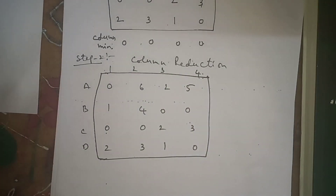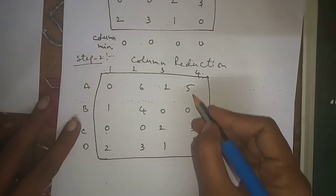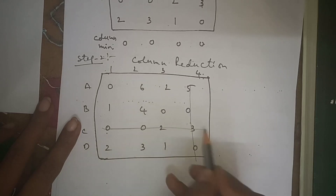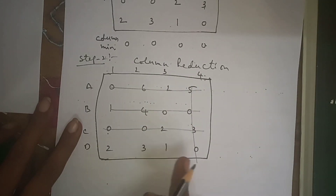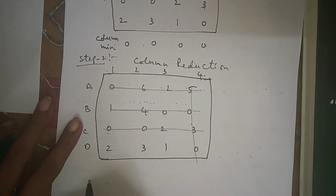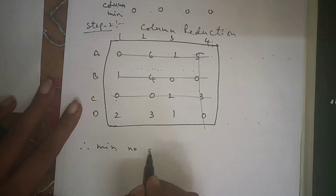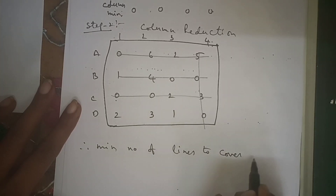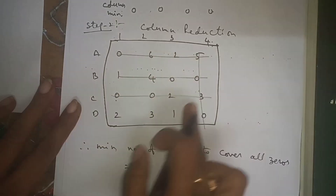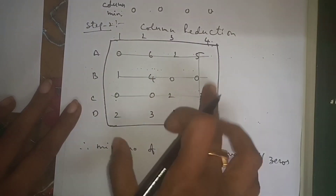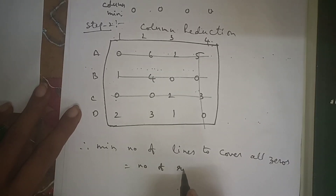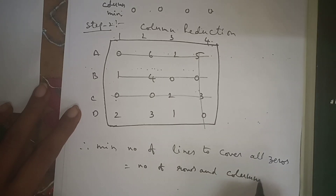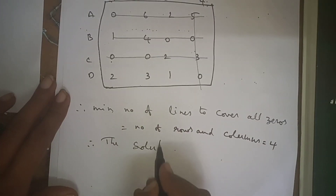Now we draw the minimum number of lines to cover all zeros. We verify whether all zeros are covered or not. The minimum number of lines to cover all zeros is equal to the number of rows and columns, which is equal to 4. Therefore the solution is optimal.